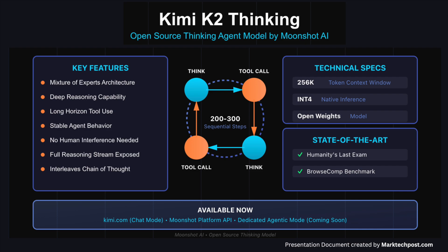The model sets a new state of the art on Humanity's Last Exam and BrowseComp while maintaining coherent behavior across about 200 to 300 sequential tool calls without human interference. K2 Thinking is released as an open weights model with a 256k token context window and native INT4 inference, which reduces latency and GPU memory usage while preserving benchmark performance. It is already live on the Kimi platform and accessible through the Moonshot API, with a dedicated agentic mode planned to expose the full tool-using behavior.